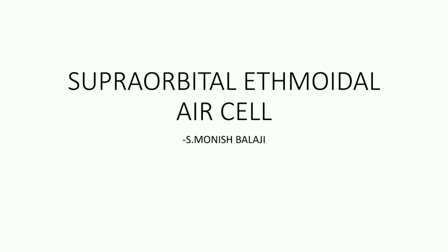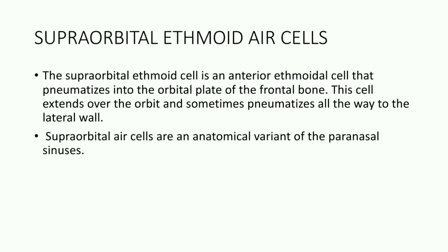Greetings, I am Dr. S. Monish Balaji. Today we'll be talking about supraorbital ethmoidal air cells. A supraorbital ethmoidal air cell is an anterior ethmoidal cell that pneumatizes into the orbital plate of the frontal bone. This cell extends over the orbit and sometimes pneumatizes all the way to the lateral wall. The supraorbital air cells are an anatomical variant of the usual paranasal sinus air cells.